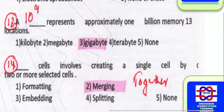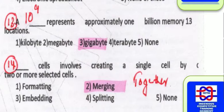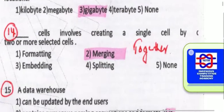10 to the power of 9 represents approximately 1 billion memory locations — that is a gigabyte. Mega means 10 to the power of 6; in the case of giga, that is 10 to the power of 9. So gigabyte represents approximately 1 billion memory locations.